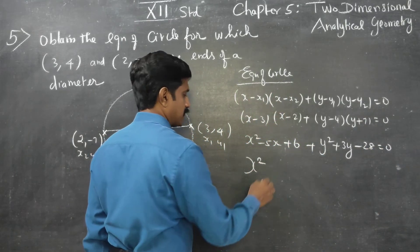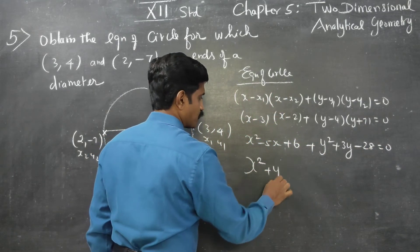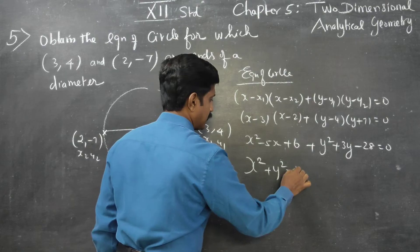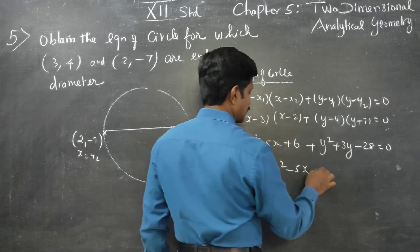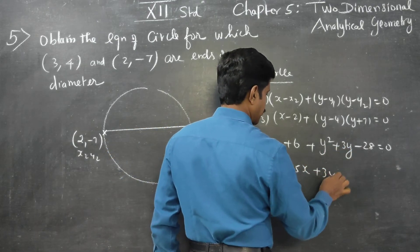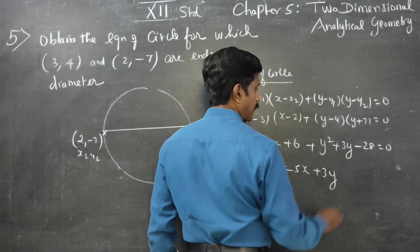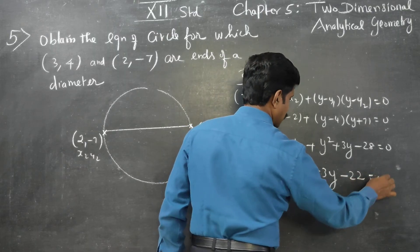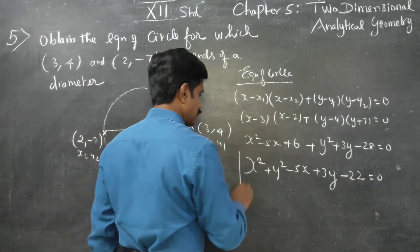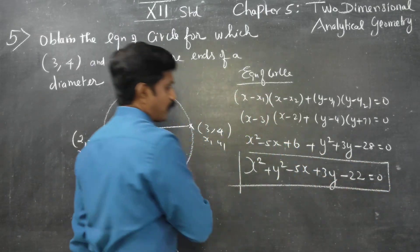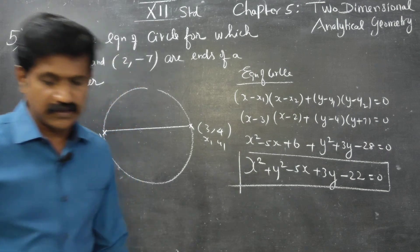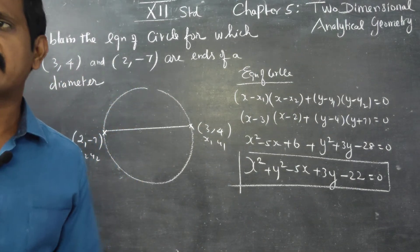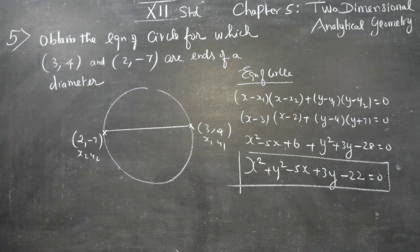The final answer is: x² + y² − 5x + 3y − 22 = 0. This is the equation of the circle when the extremities of the diameter are given. Thank you.